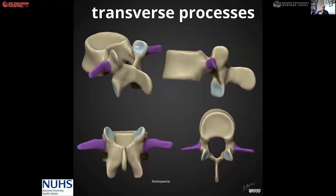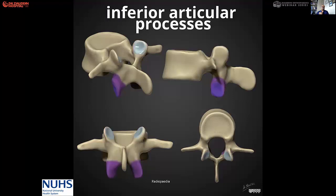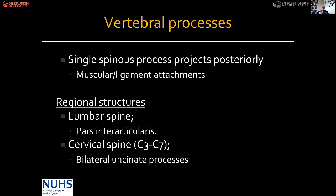This shows the transverse process, the superior articular process, and then the inferior articular process. The single spinous process projects posteriorly and is an important area for muscular and ligamentous attachment. In the cervical spine, the spinous processes are bifid.